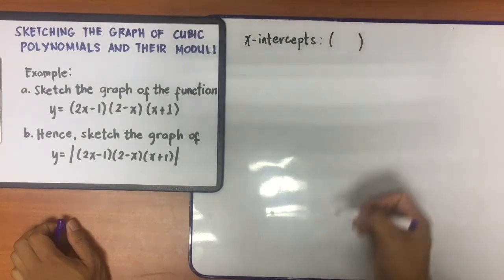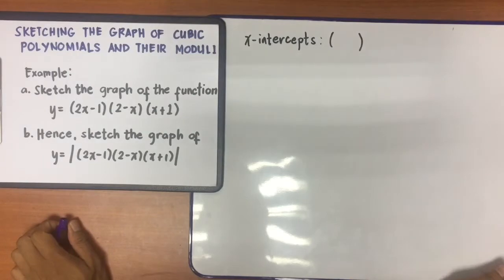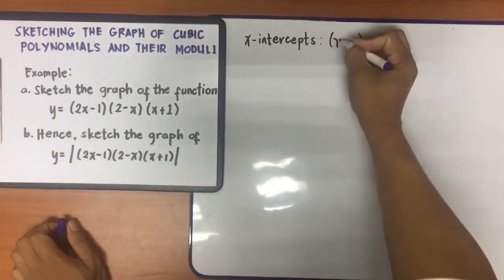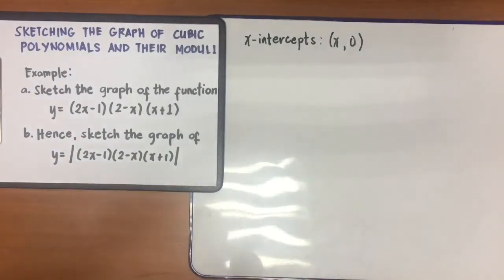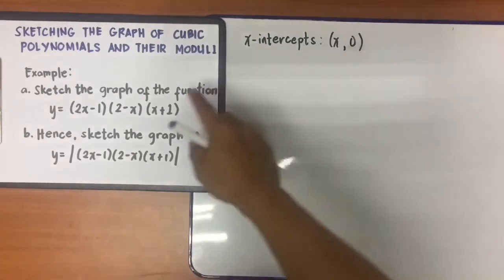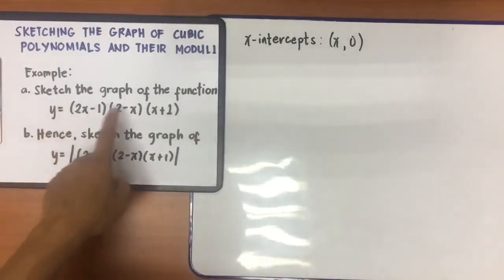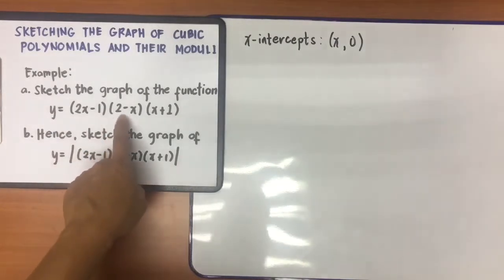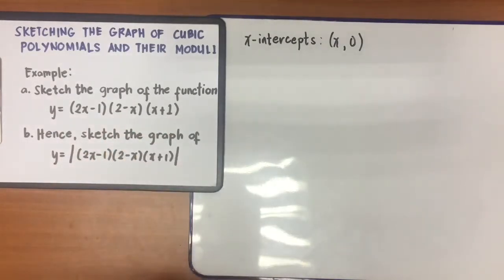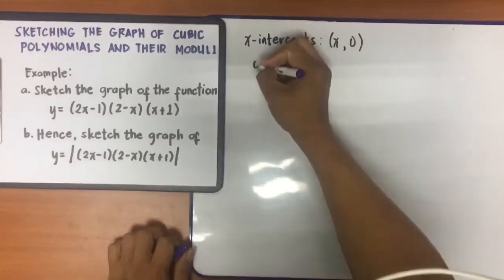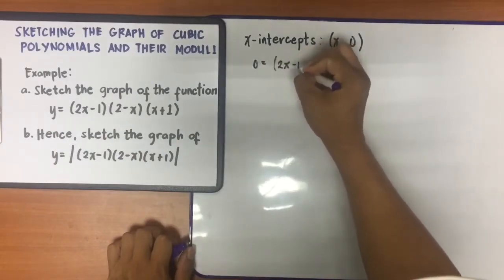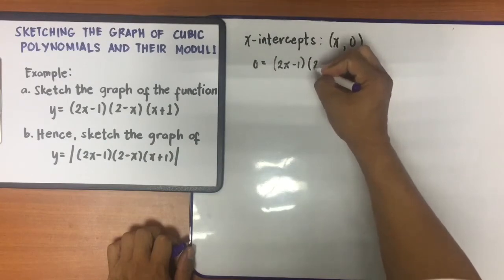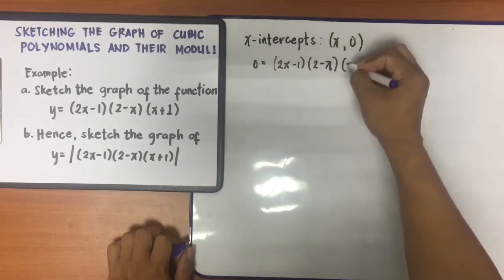x-intercepts are usually written as (x, 0). So therefore, I am going to make y equal to 0 in this example. For example, I am going to sketch y = (2x − 1)(2 − x)(x + 1), so making y = 0 gives us 0 = (2x − 1)(2 − x)(x + 1).